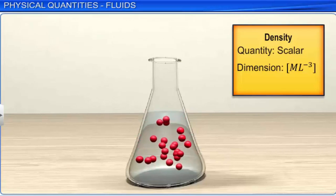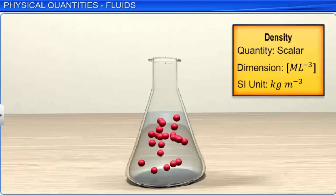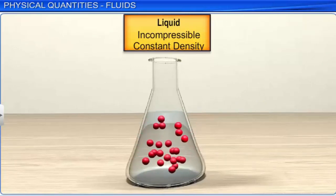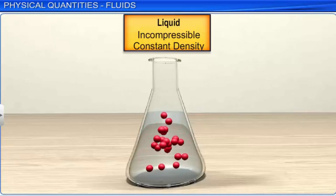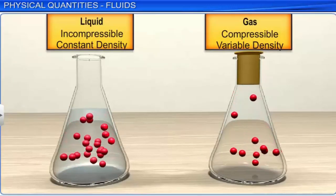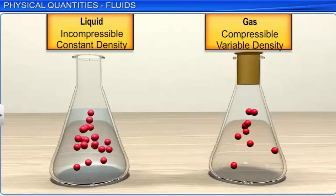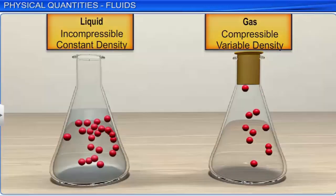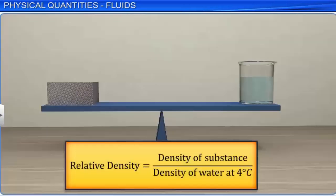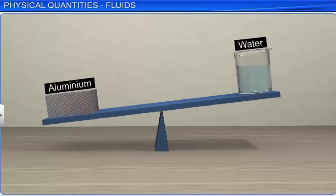The density of a liquid is almost considered constant at all pressures as it is largely incompressible. However, gases exhibit huge variations in density at different pressures as they are compressible. Generally, we refer to relative density, which is the ratio of the density of the substance to the density of water at 4°C. For example, the relative density of aluminum is 2.7. Relative density is a dimensionless scalar quantity as it is the ratio of similar quantities.